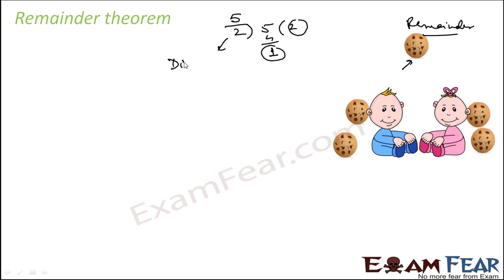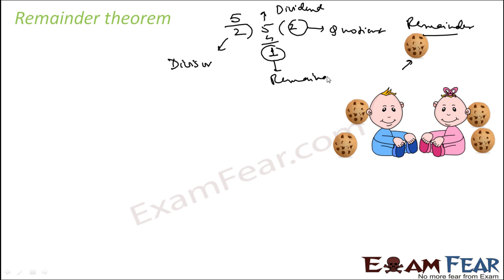So in this case, two is the divisor and five is the dividend. Each person getting two cookies is the quotient. And dividend is nothing but divisor into quotient plus remainder.